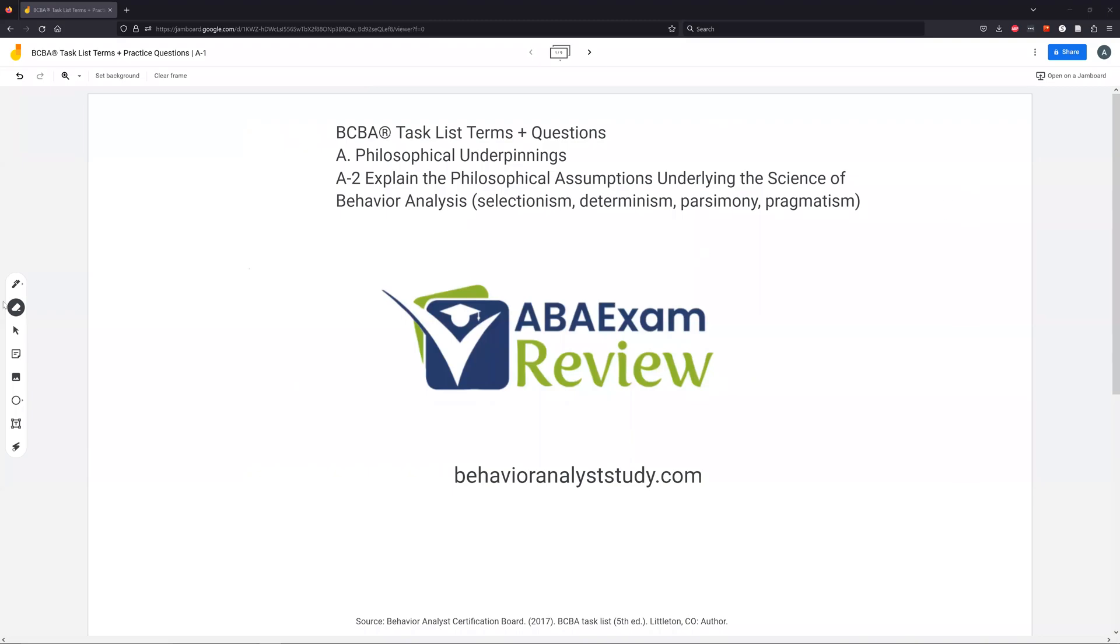All right. Welcome back to ABA exam review. Today, we are continuing our BCBA task list series with philosophical underpinnings A2, the philosophical assumptions of behavior analysis. The task list has selectionism, determinism, parsimony, and pragmatism listed. We will cover those four plus two more. As always, like, subscribe, check out behavioranalyststudy.com for all of our study materials. When you pass, let us know so we can include you in our Sunday shout out. Work hard, study hard. Let's get going.